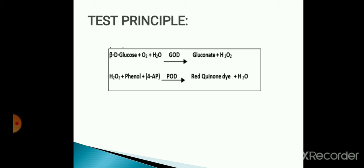Hydrogen peroxide further reacts with phenol and 4-aminoantipyrine by the catalytic action of peroxidase to form a dye complex. The intensity of the color formed is directly proportional to the amount of glucose present in the sample.